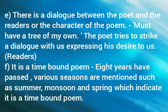Feature E: there is a dialogue between the poet and the readers. 'Must have a tree of my own' — the poet tries to strike a dialogue with us, expressing his desire to own a tree. Feature F: it is a time-bound poem. The first line references the past — eight years have passed. The usage of various seasons such as summer, monsoon, and spring further indicates that this poem is time-bound.